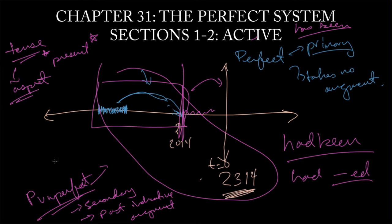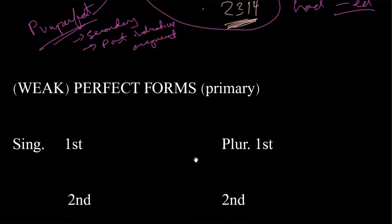Hi again, everyone. Checking in again on chapter 31 of Shelmerdine's Introduction to Greek, and we're talking about the perfect system. Last time I drew this was like the fourth XY axis chart that I'd drawn, but we were explaining the aspect of the perfect, this completed action in the past with present relevance. I'm not going to rehash that, you can look in the last video. Let's go to how we would actually go about forming this.